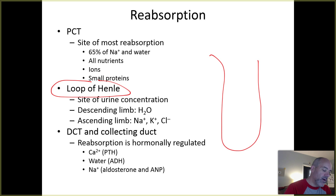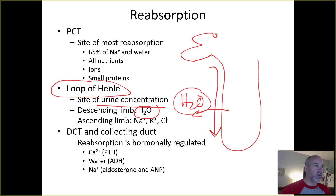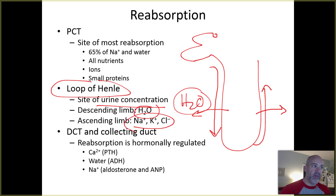The loop of Henle is the part of the nephron that hangs down and is the main site of urine concentration. In the descending limb — connected to the proximal convoluted tubule — lots of water moves back into the tissues. On the ascending limb, sodium, potassium, and chloride ions move out into the surrounding tissue fluids. We'll talk more about how that works for urine concentration in a separate video lecture.